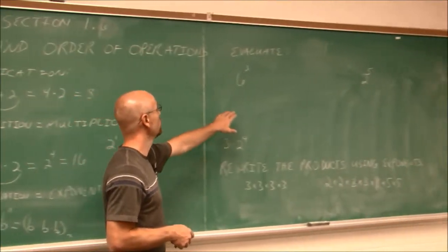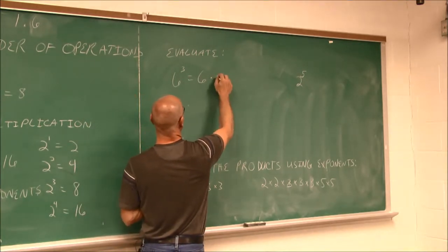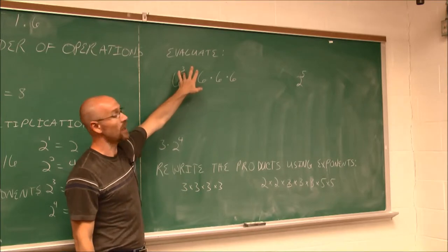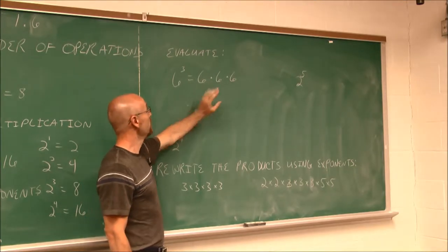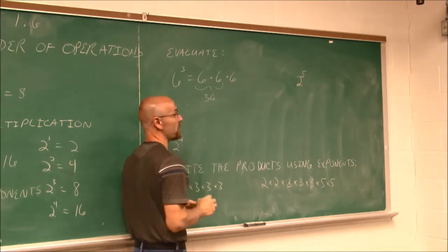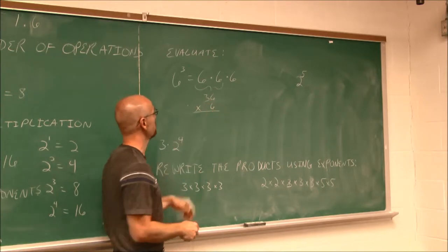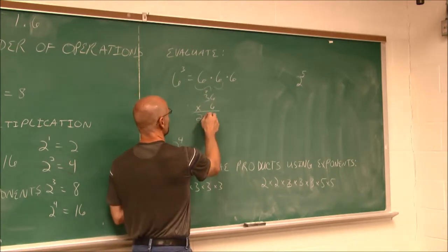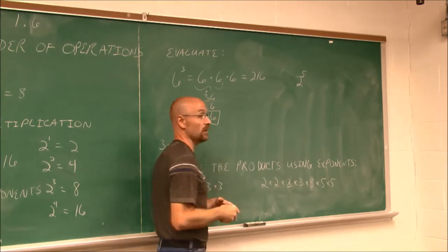Let's look at how we evaluate these. In this example, we evaluate 6 cubed. Essentially, that means 6 times 6 times 6 — three factors of 6. This does not mean 6 times 3, which would be 18 — that's a common error to avoid. Taking it one piece at a time: 6 times 6 is 36, then multiply by that third factor of 6. We can multiply 36 times 6: 6 times 6 is 36, carry the 3, 6 times 3 is 18, plus 3 more is 21, giving us 216. So 6 cubed is 216.